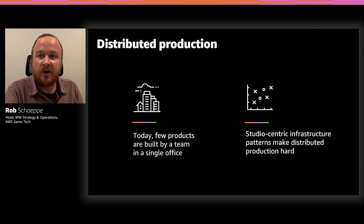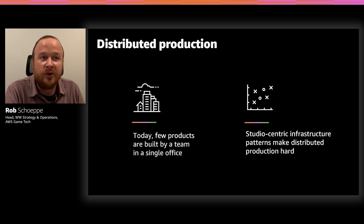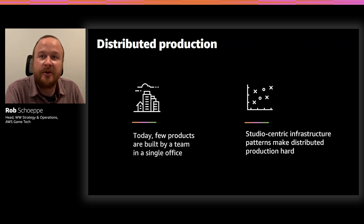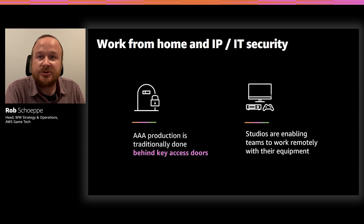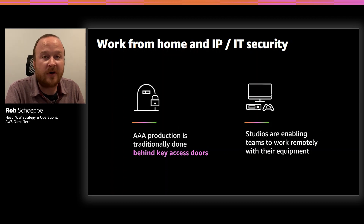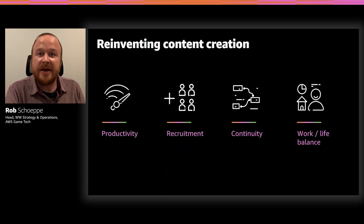At AWS, our goal is really to help customers redefine the future of the games industry. This can be seen through examples like Epic, who are currently leveraging the Cloud to invent new ways to engage with players, creating never-seen-before experiences. And now with the challenges we face in 2020, we're helping game customers redefine how games are made. The AWS Game Tech vision is to enable game developers of all sizes to be successful and realize their creative vision in a distributed world through game production in the Cloud.